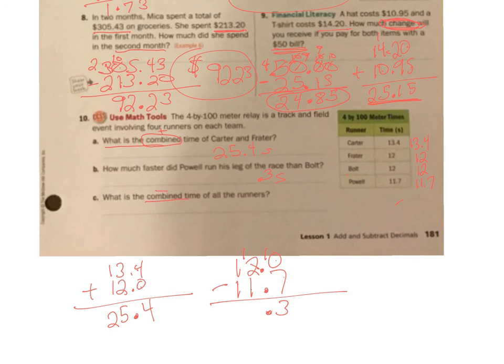Last one. What is the combined time of all the runners? That's addition again. Let's add them all up. So we have 13.4, 12, put a decimal there and then nothing, 12 nothing, and then 11.7. So all of these decimals line up. That drops down there. So 4 plus 0 plus 0 plus 0 plus 7 is 11. Goes like that. And then 1 plus 3 is 4, plus 2 more is 6, plus another 2 is 8, plus another one is 9. And then we have 1, 2, 3, 4. So the combined time of everyone is 49.1 seconds.